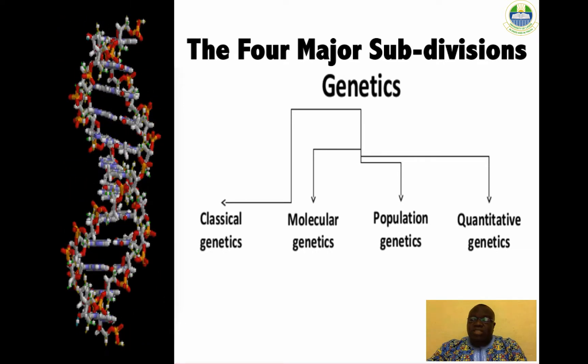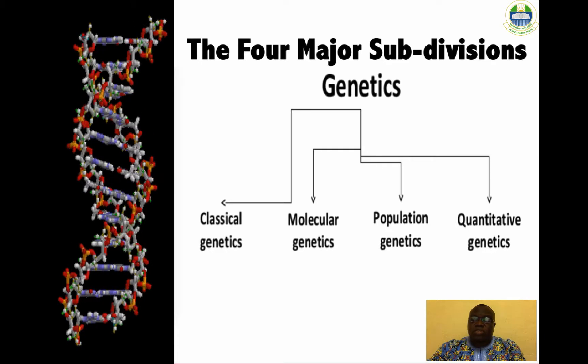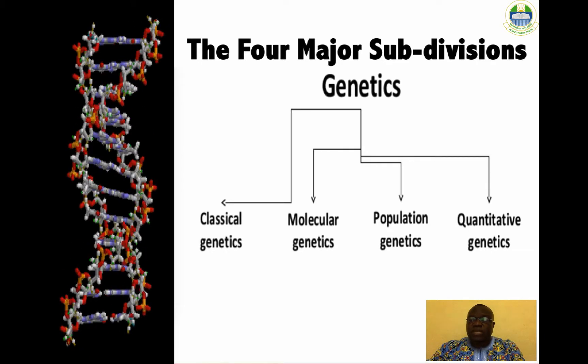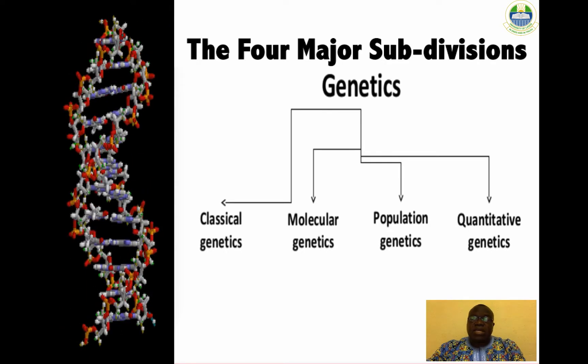Heredity describes how some traits are passed from parents to offspring, and those traits are expressed by genes, which are small sections of DNA that code for specific traits.